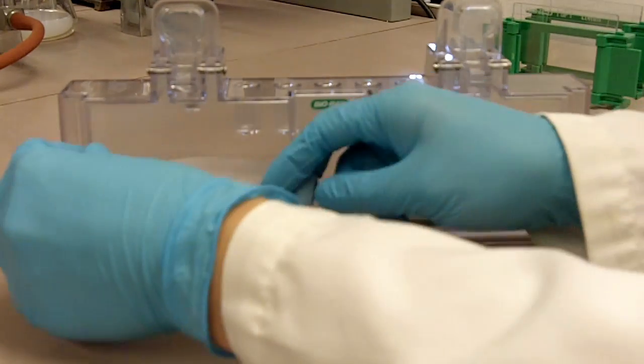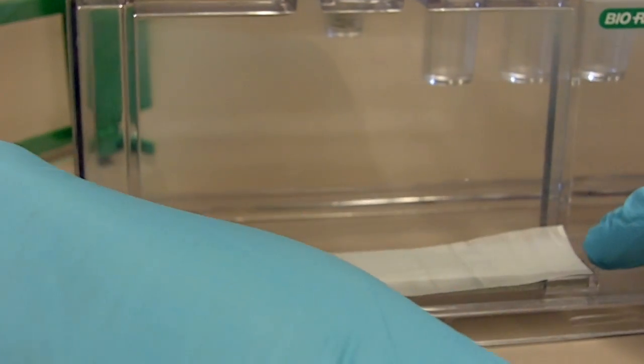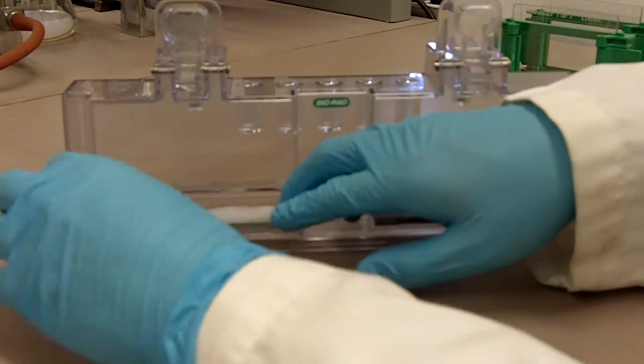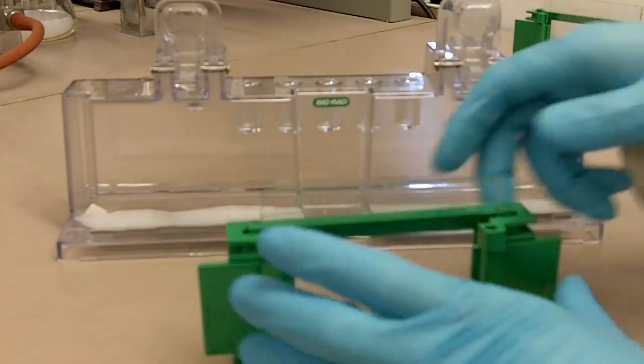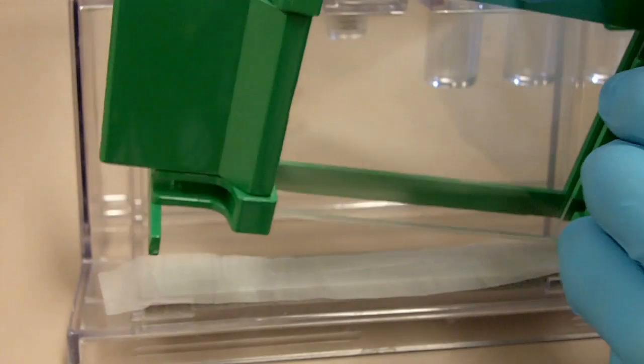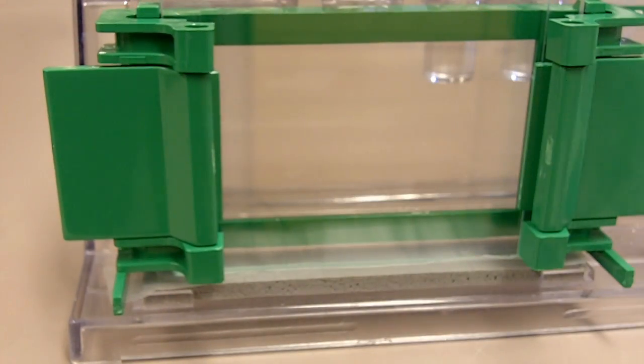So it's long enough to cover the seal. So we'll place the parafilm directly over the seal like that. And then we'll just put on the glass plate like usual.